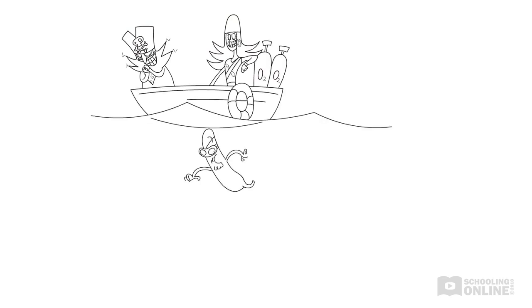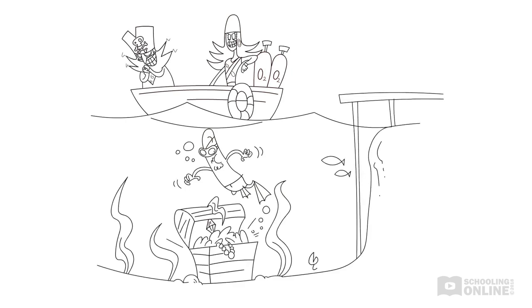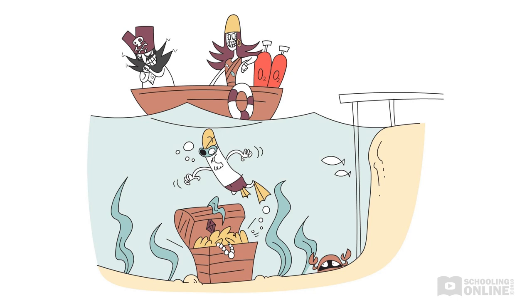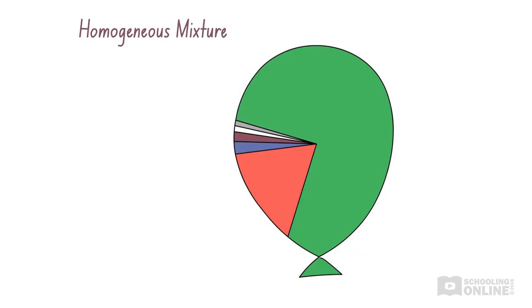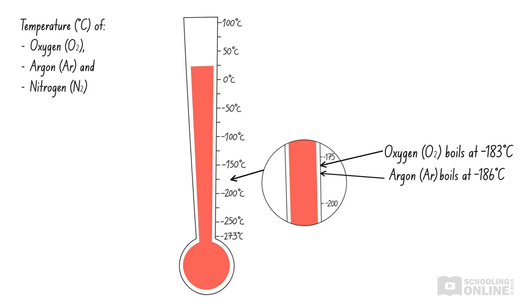Let's see how liquefaction and fractional distillation can be used to separate a mixture of gases. Long Jane Silver needs to separate oxygen gas from air. Whenever the pirates go free-diving for pearls and sunken treasure, they take some oxygen tanks in case of emergencies. Air is a homogeneous mixture consisting mainly of nitrogen and oxygen, along with traces of water vapour, carbon dioxide and argon. Each of these substances change state at different temperatures. Now, oxygen, argon and nitrogen have similar boiling points, which are all around minus 190 degrees Celsius.